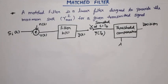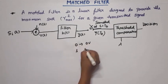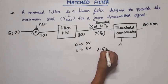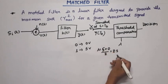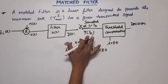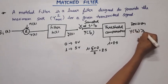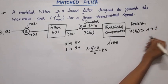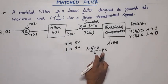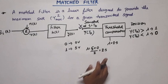At the comparator output we get a decision. For example, the threshold value is basically the average of the two signals we have. We have two inputs: zero or one. For zero, the voltage level defined is zero volts, and for one the voltage level is five volts. So the threshold value will be (5 + 0) / 2 = 2.5 volts. If the output of the sampler y(T_b) is greater than 2.5V, the result will be in favor of one; if y(T_b) is less than 2.5V, the result will be in favor of zero.